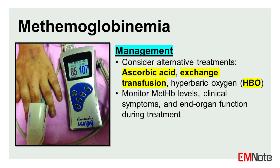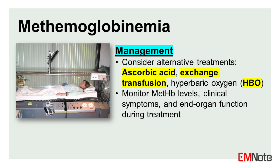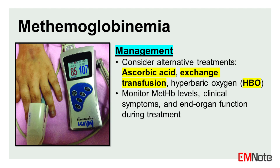Alternative treatments include: ascorbic acid, which may be used as an alternative reducing agent particularly in G6PD deficient patients, though its onset of action is slower compared to methylene blue; exchange transfusion, which can be considered in severe cases unresponsive to methylene blue or in G6PD deficient patients; and hyperbaric oxygen therapy, which may be beneficial in severe cases, although evidence is limited. Regular monitoring of methemoglobin levels, clinical symptoms, and end-organ function is essential during treatment.